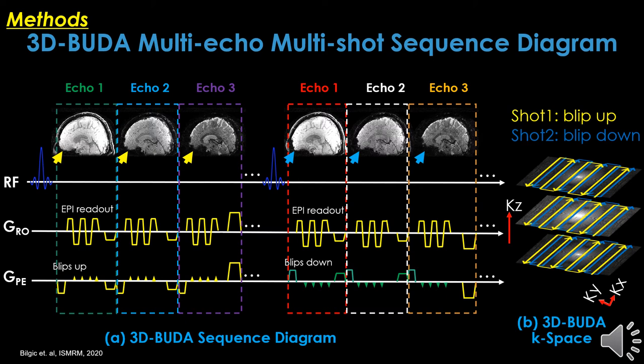However, it is not appropriate for multi-contrast imaging to acquire parameter mapping. Herein, we propose to use a multi-echo multi-shot sequence for rapid and robust multi-contrast imaging.